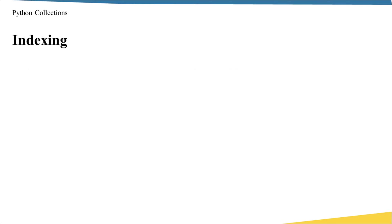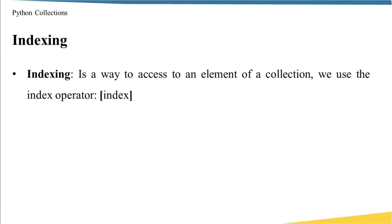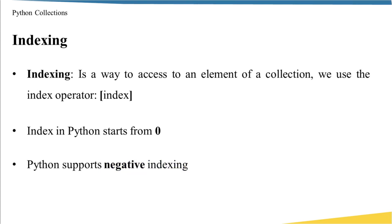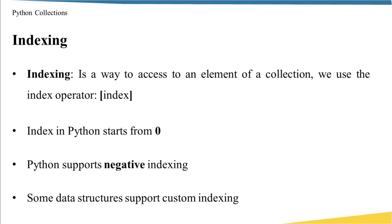Now let's talk about the third attribute, which is indexing. Indexing is a way to access an individual element of a collection. Usually, to use indexing, we use square brackets. If a collection has the ability to extract each individual item, we say it supports indexing. In Python, the index starts from zero, so the first item is at location zero, the second at location one, and so on. Python also supports negative indexing — minus one represents the last item, minus two represents the item before the last, and so on. Also, in Python there is a data structure called dictionary, in which you can define your own index set if you don't want to use numbers as indexes.